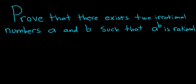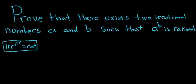Prove that there exist two irrational numbers, a and b, such that a to the b is rational. Basically, we're trying to prove that it's possible to have an irrational number to an irrational number equal a rational number. We're going to prove that this is actually possible in mathematics. Proof.